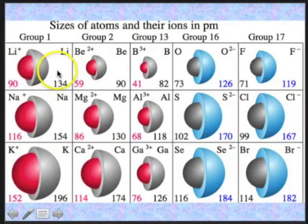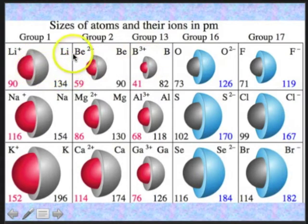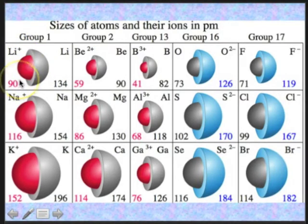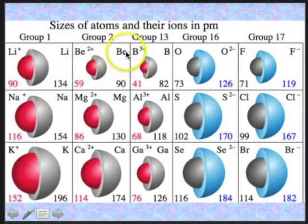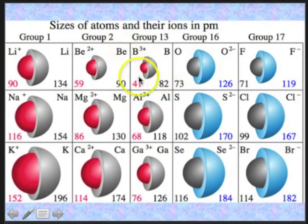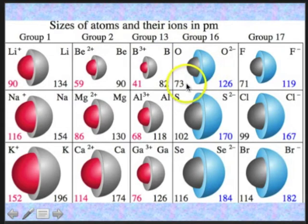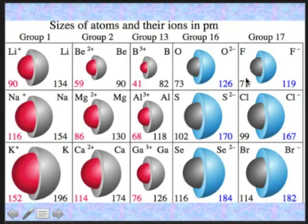Here's a table comparing the sizes of neutral atoms to their ionized forms. Lithium loses an electron to become Li+: the Li+ ion is 90 pm versus 134 pm for the neutral atom — the cation is smaller. Beryllium: Be2+ is 59 versus 90 for the atom. Boron: B3+ is 41 versus 82. Cations are smaller than neutral atoms. For anions, oxygen gains two electrons and becomes larger — 126 versus 73 — and fluoride is 119 versus 71. Anions are larger than neutral atoms.